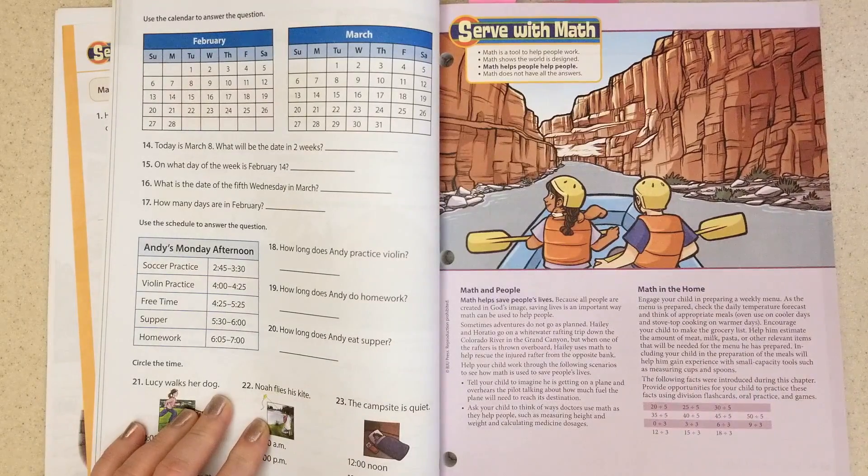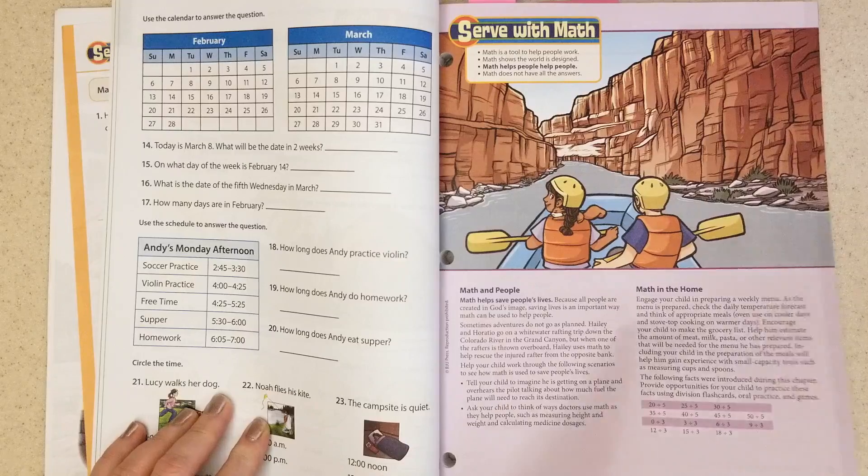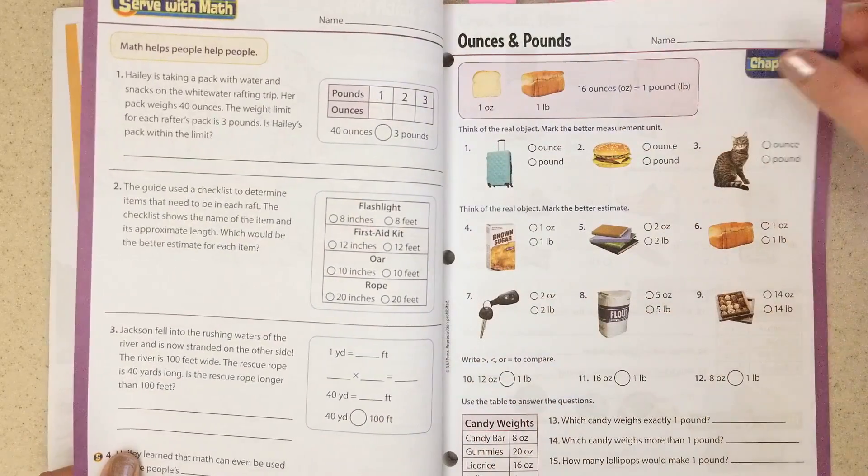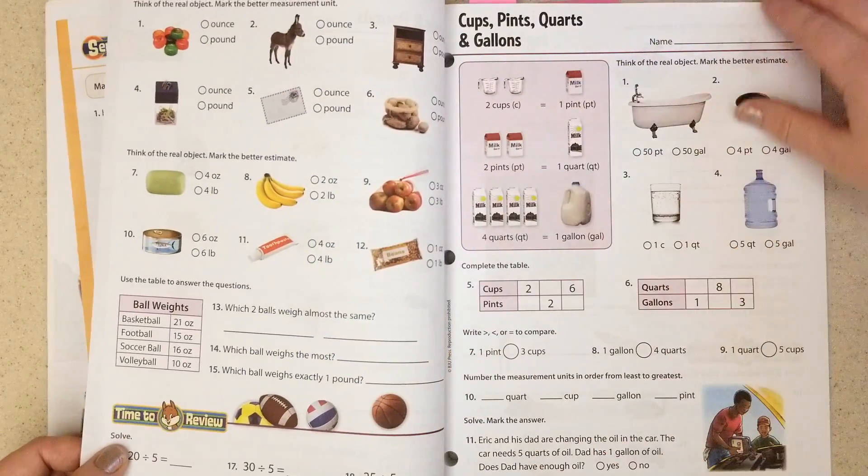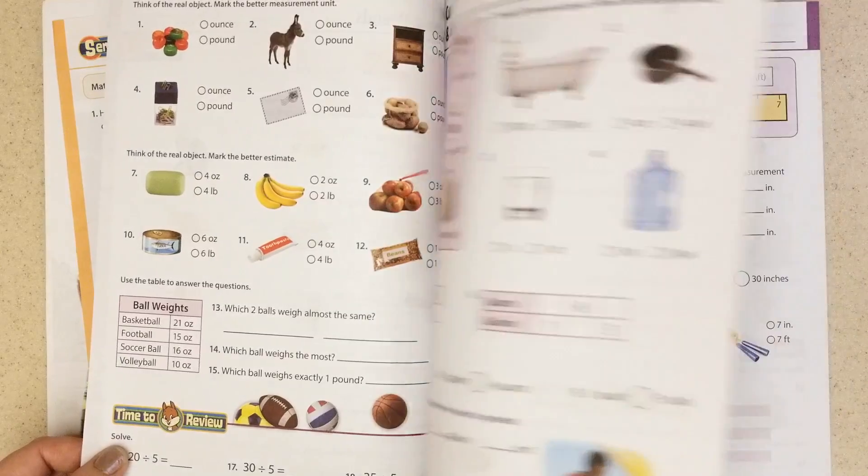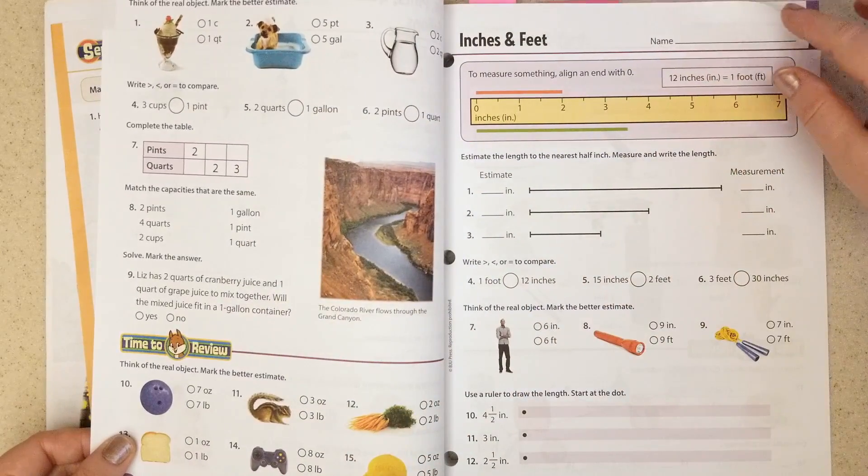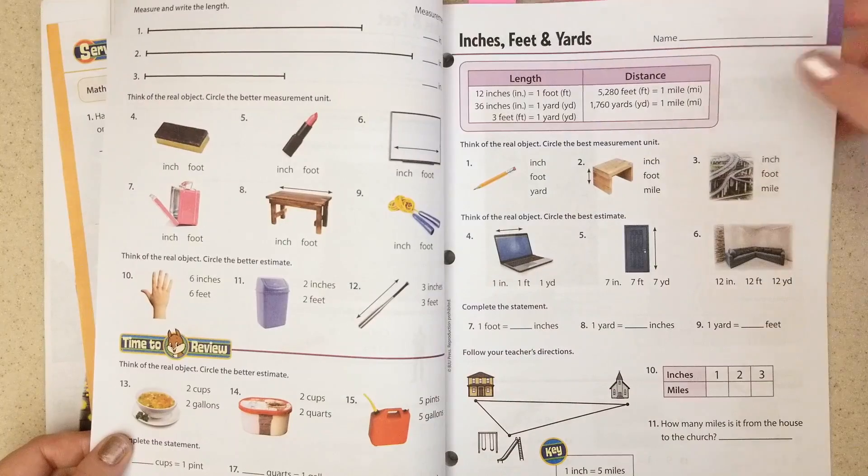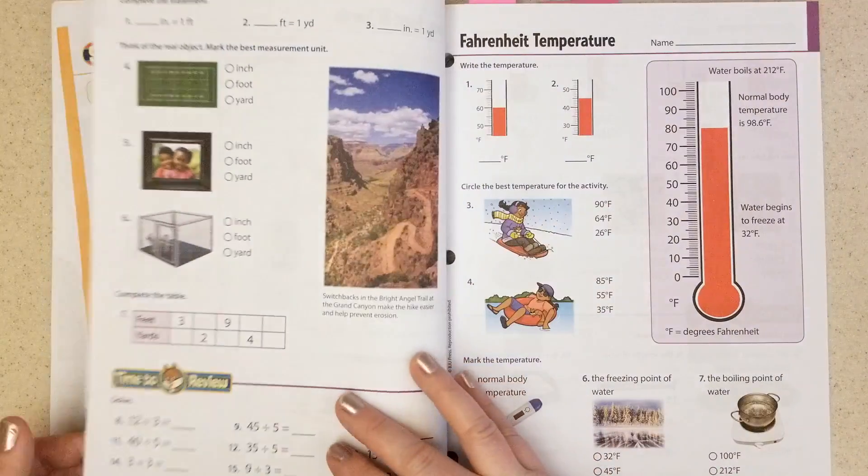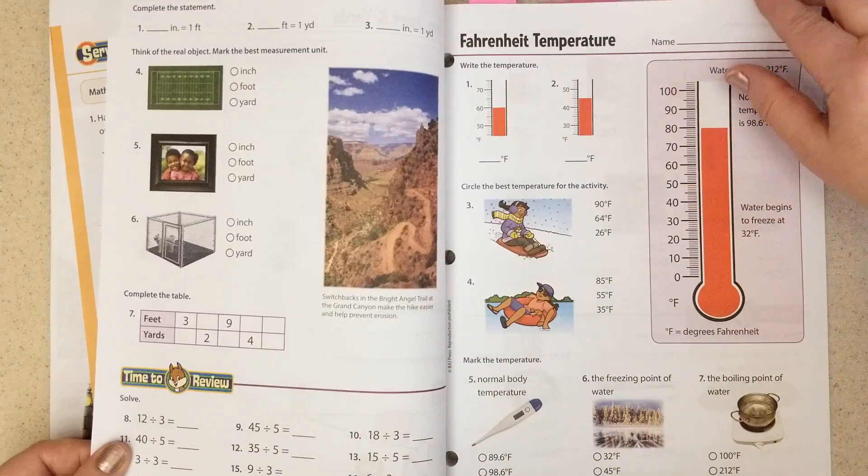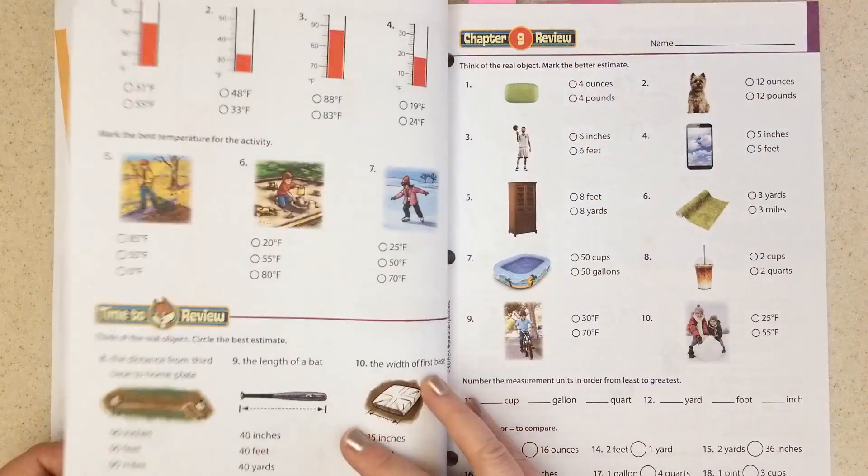This is chapter nine. They're going over ounces and pounds, cups, pints, quarts, and gallons, which are really fun. Measuring things, we love measuring things in the house, even taking a yardstick or a ruler or a measuring tape and going around the house and just measuring things is so fun.